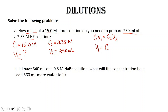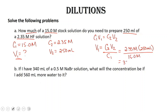We end up with V1 = C2V2 divided by C1. This is going to be 2.35 molar times 250 milliliters, all divided by 15.0 molar, and we end up with 39.16. Considering our sig figs — we only have two — we're going to have 39 milliliters. Let's check: V1 should be less than V2. V1 is 39 milliliters whereas V2 is 250 milliliters, so we solved this correctly.